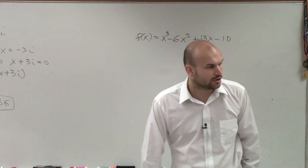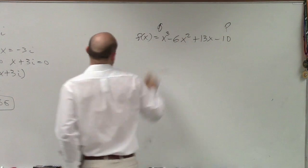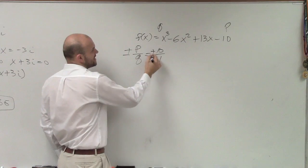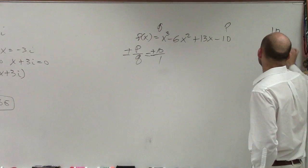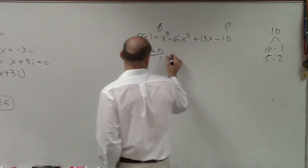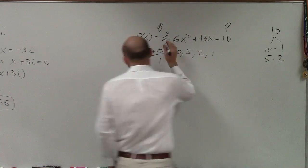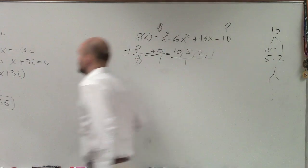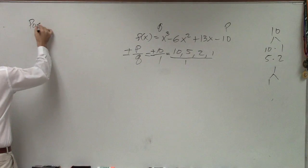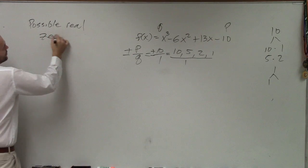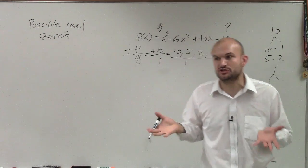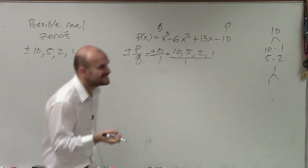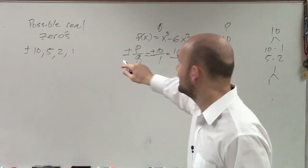There are a couple things we can do. One, we can always go back to the rational zero test, where we look at our p and our q. Taking plus or minus p over q, we have the factors of 10 over 1. The factors of 10 are 10, 5, 2, and 1. Since the leading coefficient is 1, the only denominator is 1. So our possible real zeros are plus or minus 10, 5, 2, and 1. If we have a rational zero, it's going to be one of those numbers.